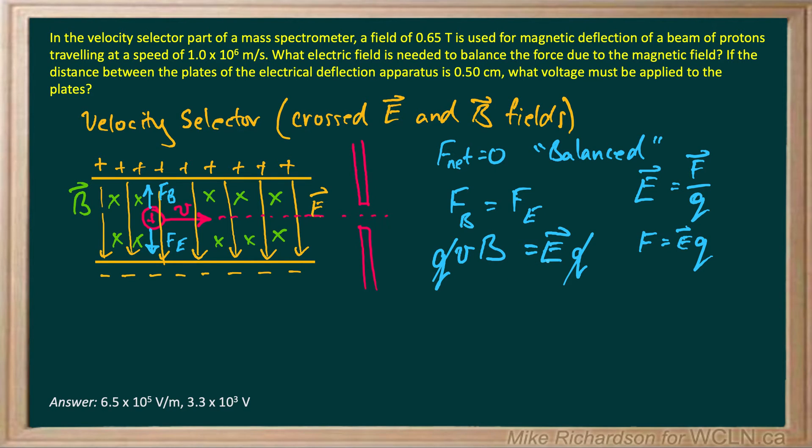Now they want to know what the electric field is. So it's already solved for electric field. My electric field will be V times B. And they give you both those things. 1.0 times 10 to the sixth meters per second is my velocity. And my magnetic field is 0.65 Teslas.